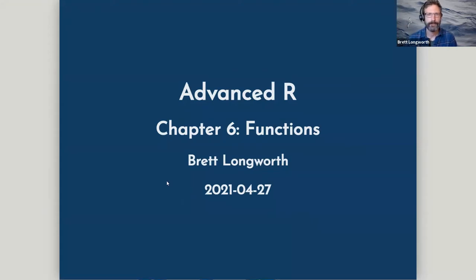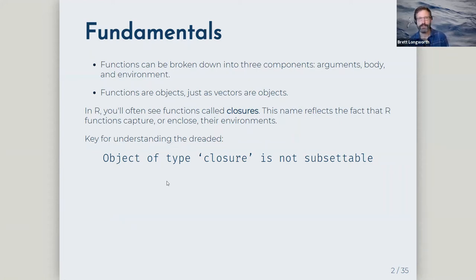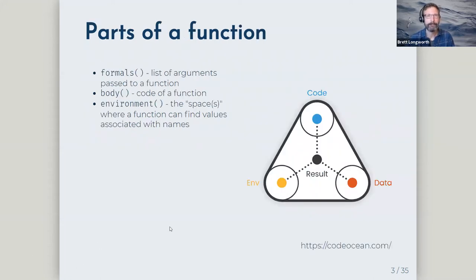Function fundamentals: functions can be broken down into three components — the arguments (formals), the body, and the environment. Functions are objects, just as everything in R is an object. Sometimes in R you'll see functions called 'closures,' reflecting the fact that functions capture or enclose their environment. This is key for understanding the error: 'object of type closure is not subsettable.'